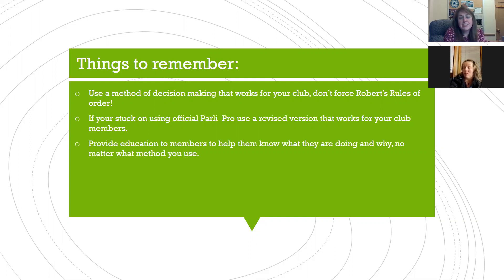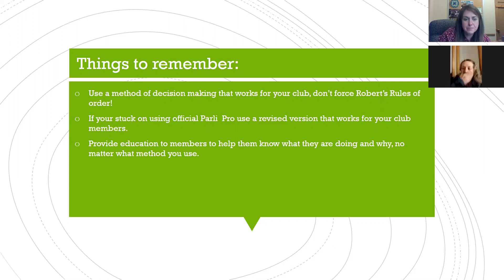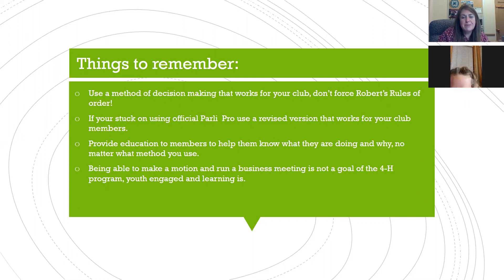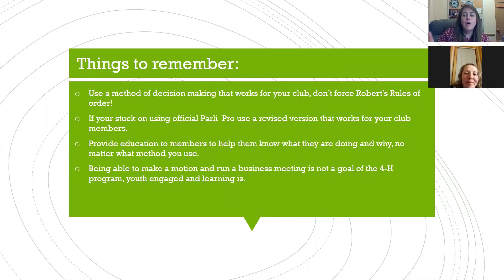If you're going to do something, provide education to members to help them know what they're doing and why, no matter what method you use. That could be discussions at the beginning of the meeting, something written on your agenda, or a presentation at the beginning of the year. Being able to make a motion and run a business meeting is not the goal of the 4-H program — youth engaged in learning is. If Robert's Rules or your meetings are getting in the way of that engagement, we really need to think about why we're here and what we're doing.